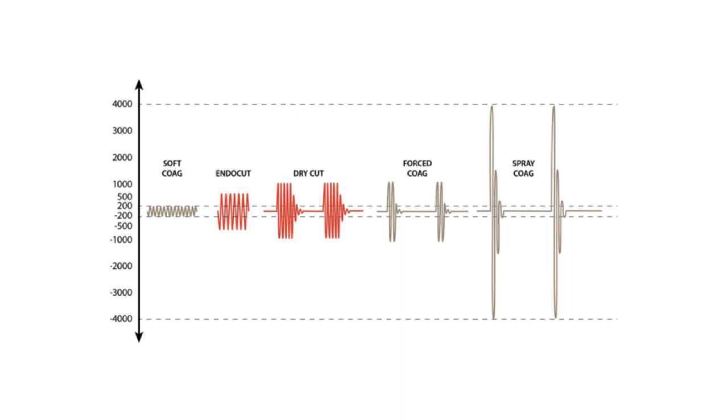When it comes to forced coagulation and spray coagulation, it is a higher voltage with interrupted cycles. Spray coagulation has very high voltage. This is not typically used in snare polypectomy. We use forced coagulation for snare polypectomy and soft coagulation for superficial coagulation and for blood vessel coagulation.